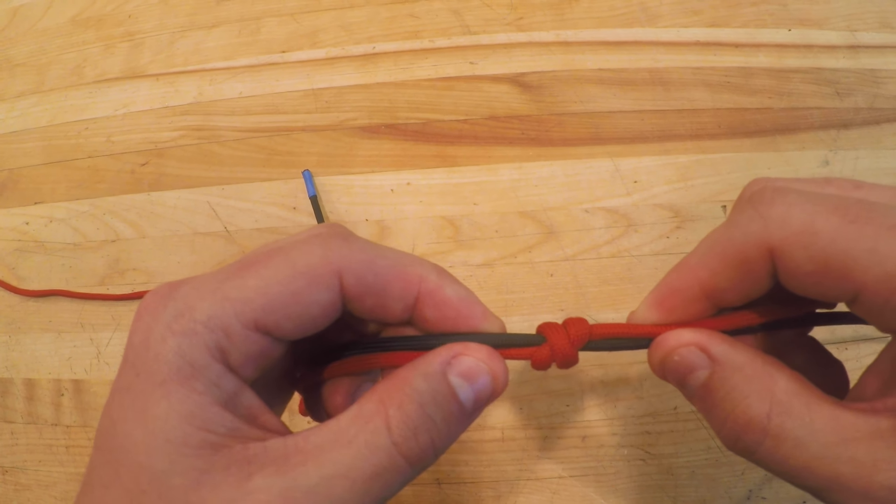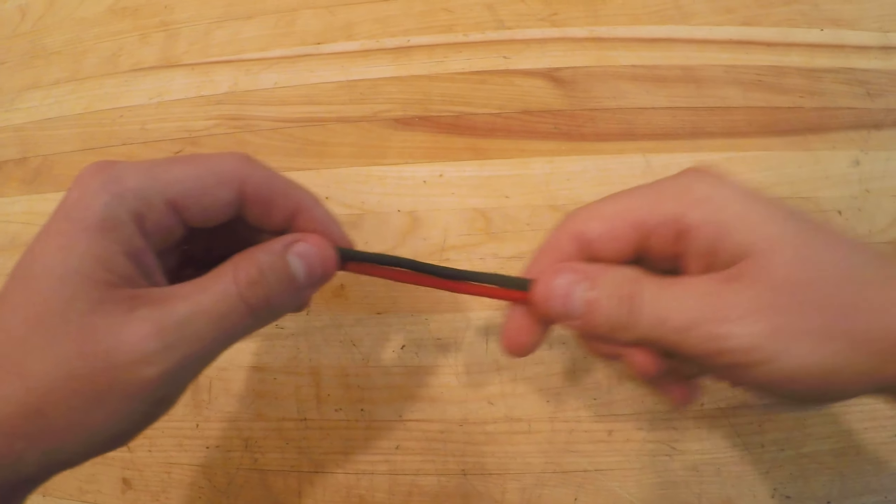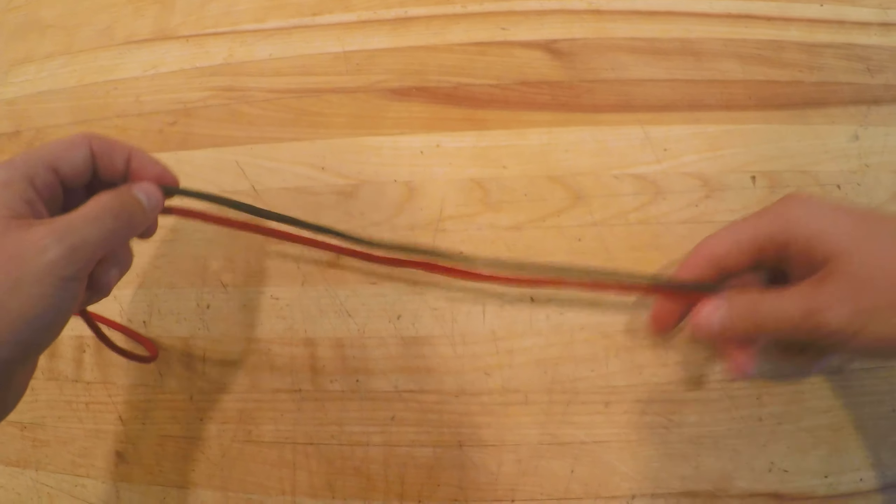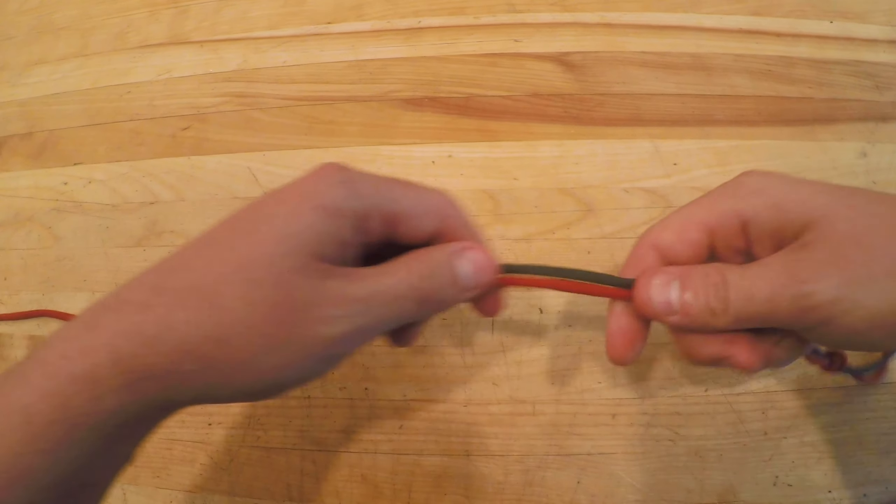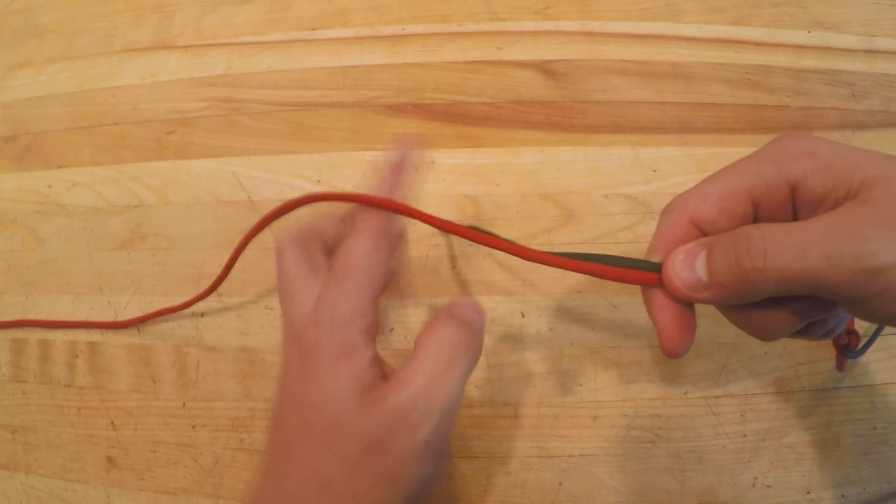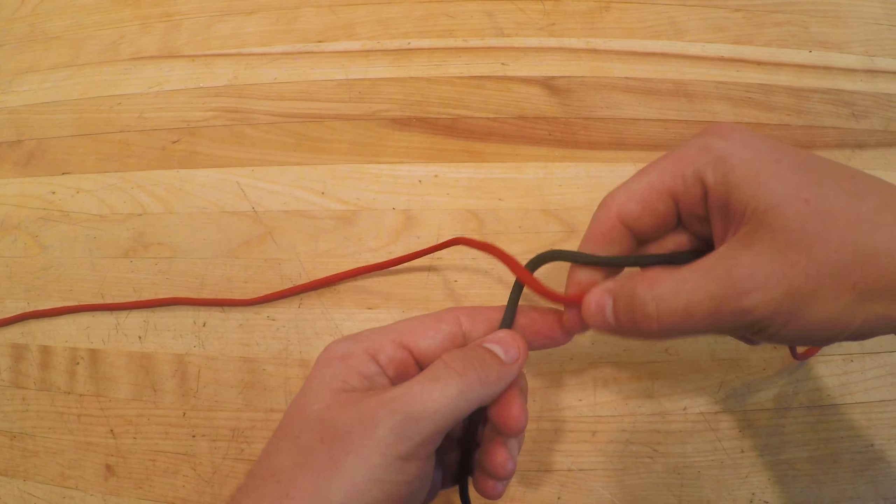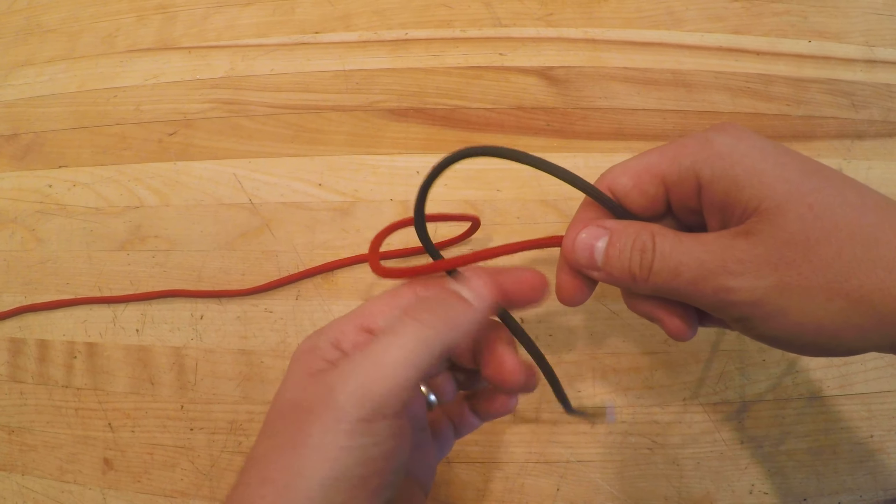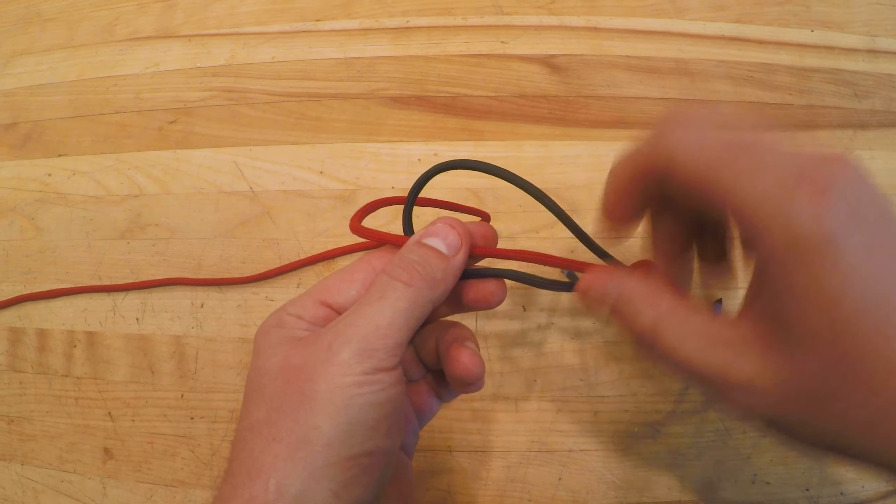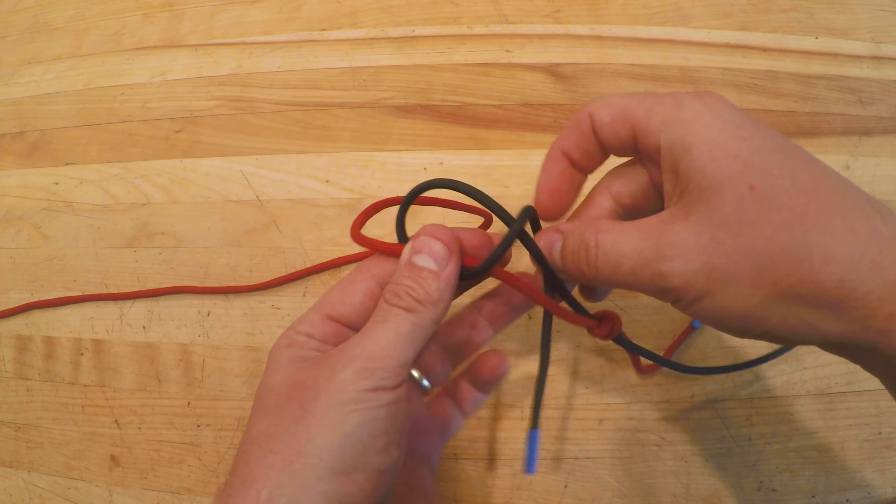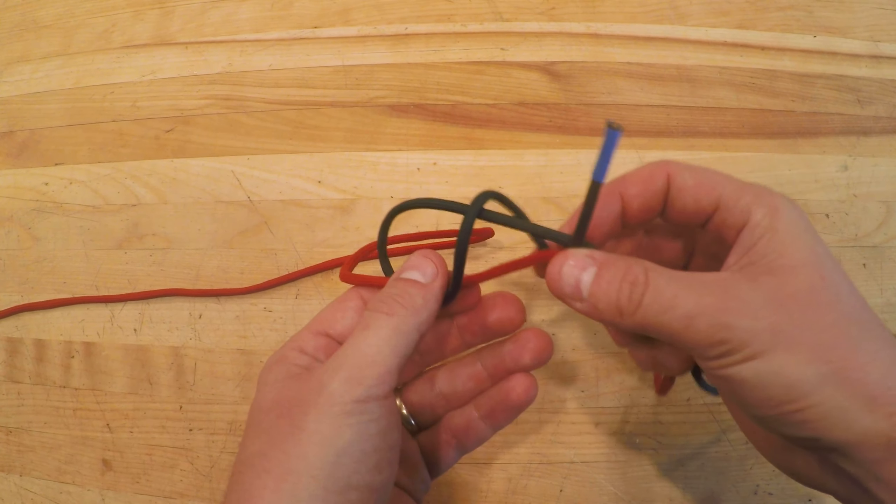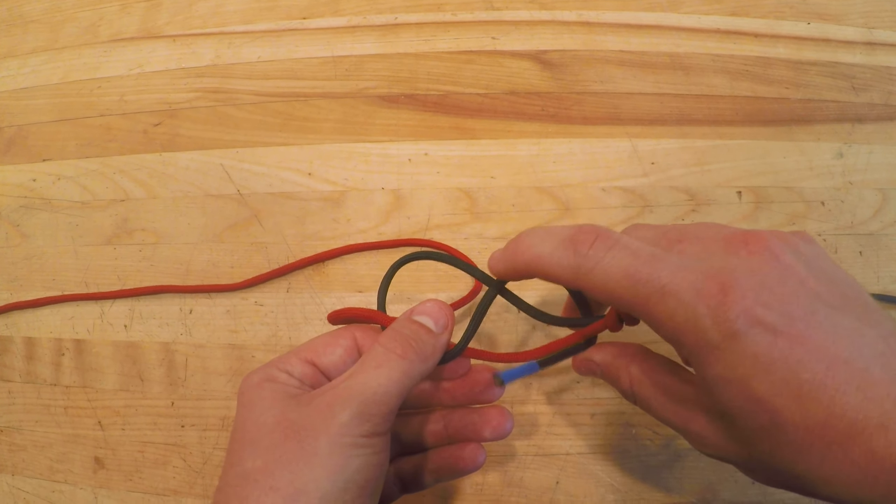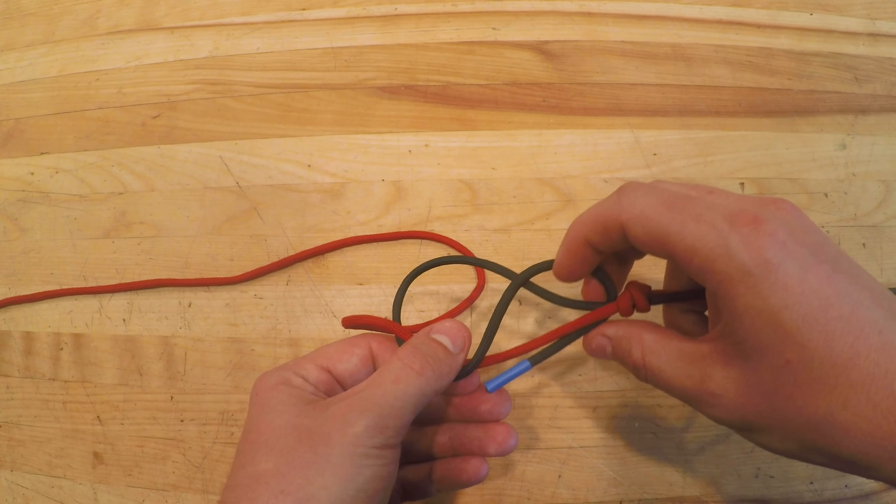Now all we're going to do is essentially the same thing on the other end. So with my green rope on top, my red rope on bottom, I'm going to take my green rope, pass it underneath the red, give myself plenty of line, bring it over the top and bring it back underneath. And you'll notice again I formed what looks like a figure eight with an X in the center.